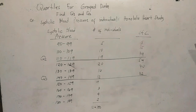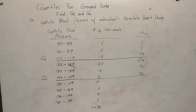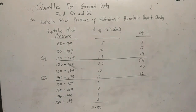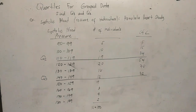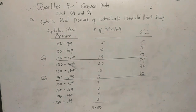Group data are data presented in a frequency distribution. These data are arranged in order of magnitude. Let us recall the formula and the procedure in getting the median score for group data, and the interpretation of the computed value. The Quartiles for Group Data formula is almost the same as how we get the median for group data.